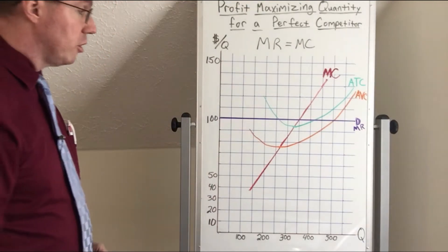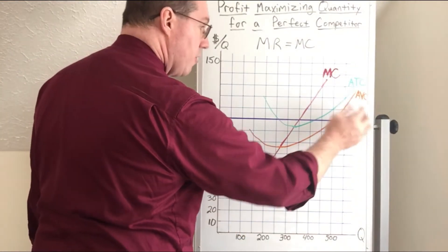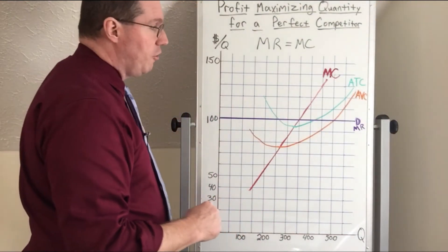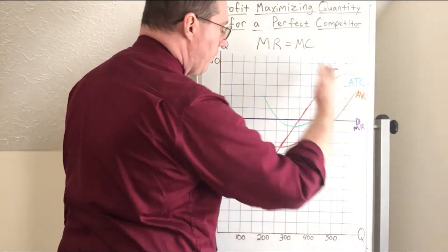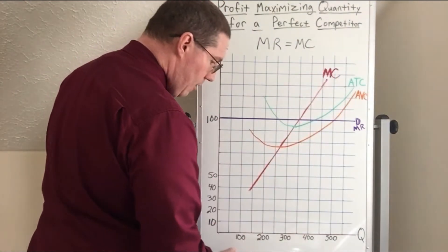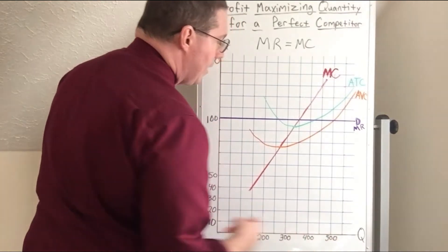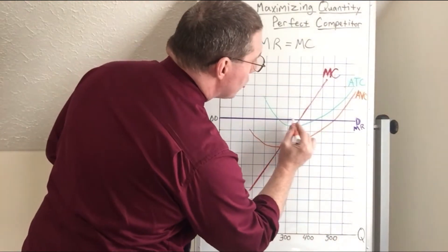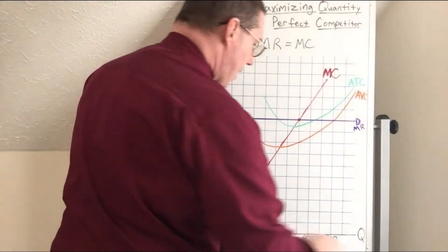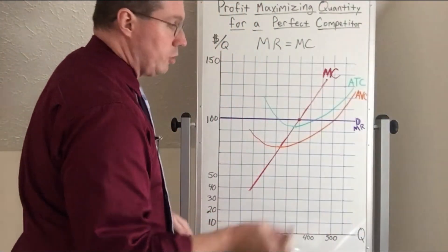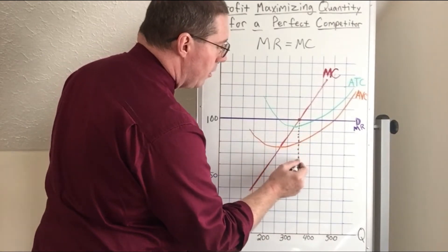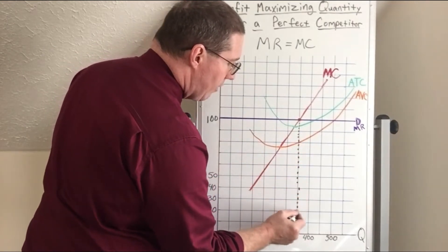What we just learned is that the marginal revenue curve is now the same thing as the demand curve, and it is horizontal. So all we have to do is go along the marginal revenue curve and along the marginal cost curve and find where they intersect. You can see where marginal revenue and marginal cost intersect right there. Where they intersect, we're going to go vertically down to the axis to identify the quantity.